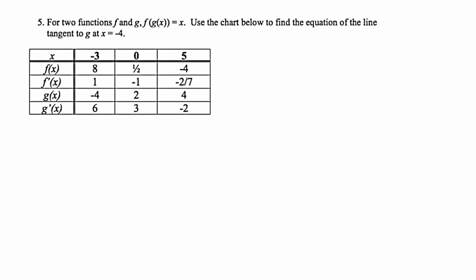We're on question number five now, and it's presented to us a little bit differently than all the other questions. All the information we need to answer the question is given in the way of this chart here. The question says, for two functions f and g, f(g(x)) = x. Use the chart below to find the equation of the line tangent to the graph of g at x = -4.